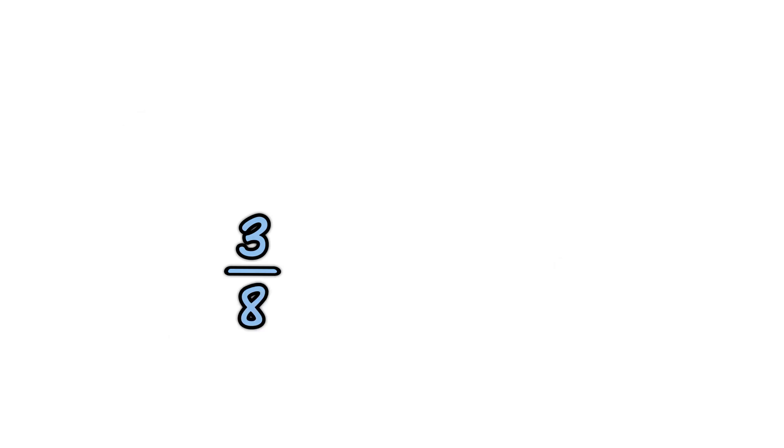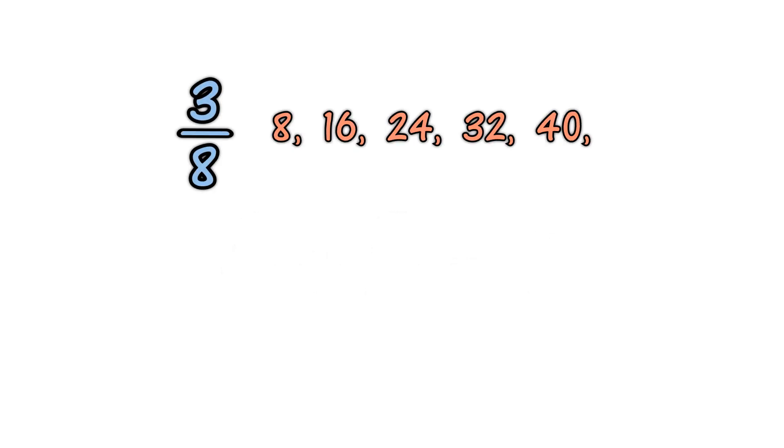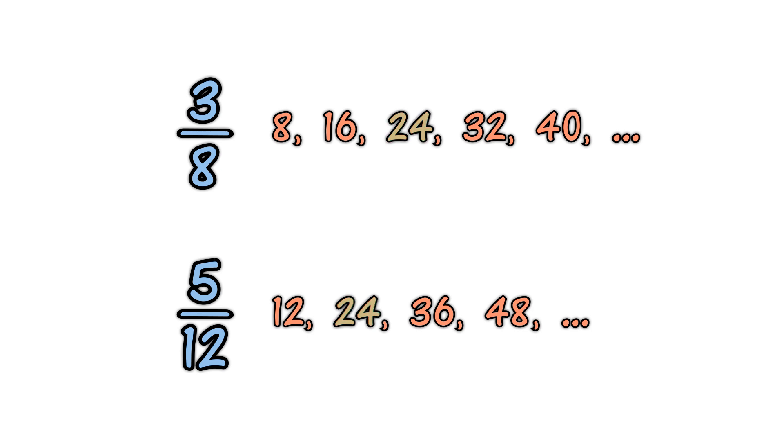What is three-eighths plus five-twelfths? List the multiples of eight and twelve. The multiples of eight are eight, sixteen, twenty-four, thirty-two, forty. Multiples of twelve are twelve, twenty-four, thirty-six, and forty-eight. The least common multiple is twenty-four.